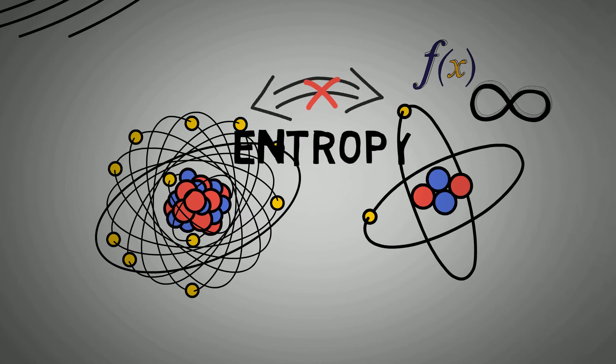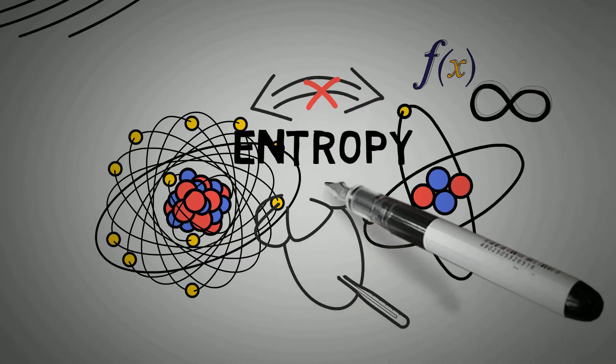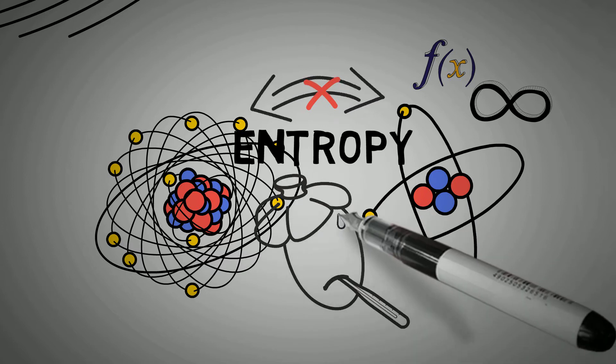These simple examples capture the essence of entropy. Entropy is a measure of disorder, and there are always far more disorderly variations than orderly ones.